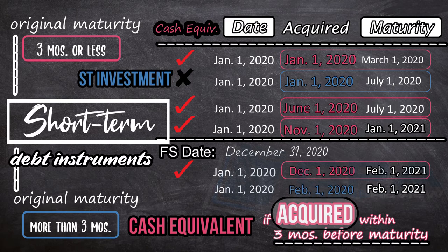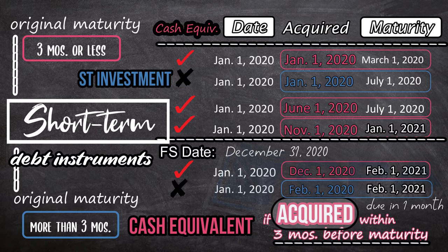Last case: the instrument matures 1 month from the end of the year. The dates to compare show it was acquired on February 1, 2020, which is actually 1 year from maturity. This is not a cash equivalent — this is an investment. Since the investment matures 1 month from the end of the year, it is classified as a short-term investment.